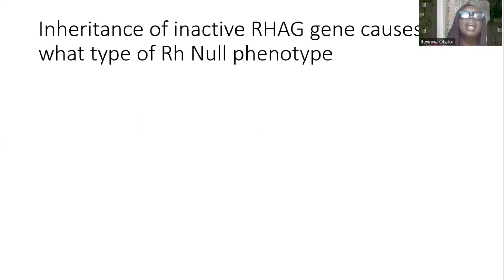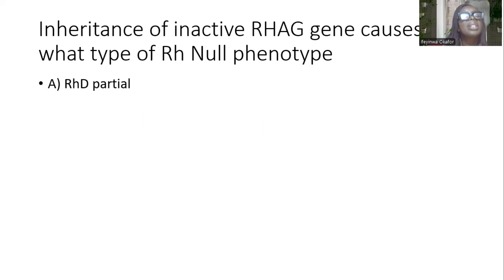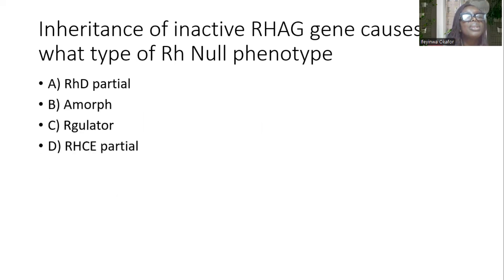Inheritance of an inactive RH-associated glycoprotein gene causes which type of RH-null phenotype? Options are RHD partial, Amorph Regulator, RHCE partial. And the answer is C — the Regulator type of RH-null phenotype. Absence of the active form of the RHAG gene causes the Regulator type of RH-null phenotype.